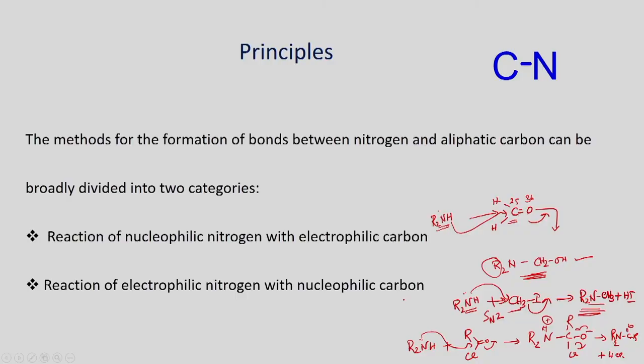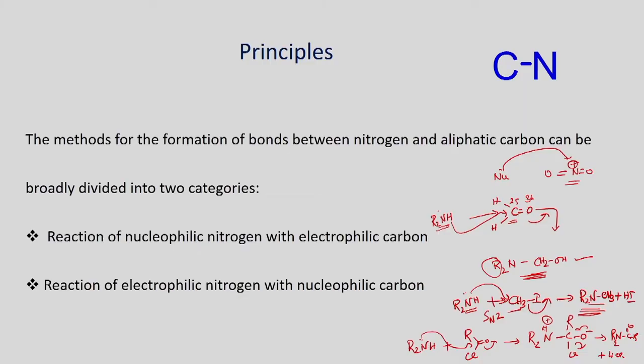On the other hand, if the nitrogen is electrophilic, it can undergo reaction with nucleophilic carbon. For example, if nitrogen is electrophilic in nature, whenever you have a nucleophile it can undergo addition reaction to give the addition product. So these are the principles of carbon-nitrogen bond formation: if nitrogen is nucleophilic it reacts with electrophilic carbon to make a C-N bond; alternatively, if you have electrophilic nitrogen, it reacts with nucleophilic carbon to make a carbon-nitrogen bond.